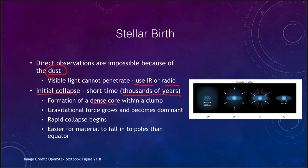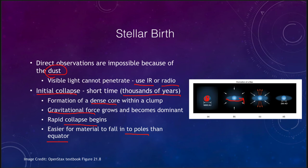You start to form a dense core within a clump of material, and within that the gravitational force will grow and eventually become dominant. Once you get enough gravity forming at the center, it begins to compress and more material falls in. The rapid collapse then begins as material collapses into a disk — it is a lot easier for material to fall in along the poles than along the equator.